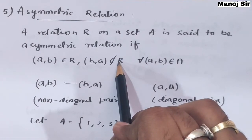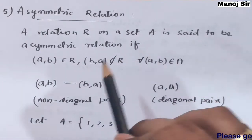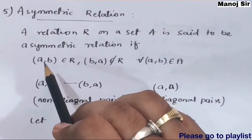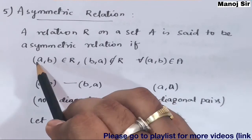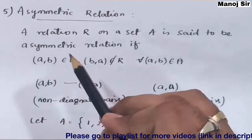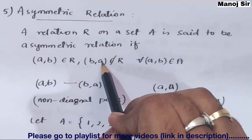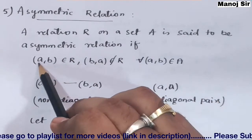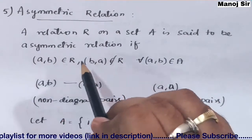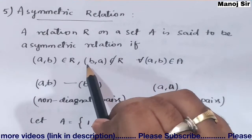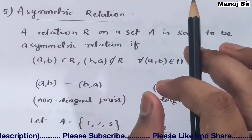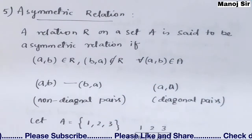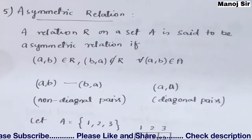It means: the symmetric pair of (a, b) is (b, a). So if (a, b) is present in the relation, then (b, a) should not be present in that relation.